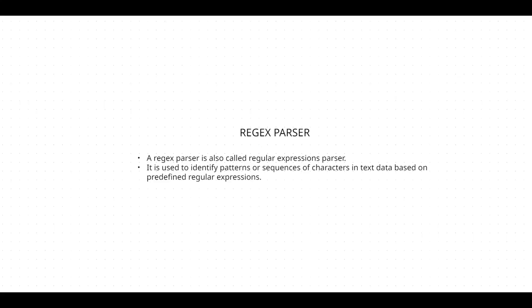Also, in some cases you want to validate data. Take the example of Google Forms — they ask you to fill in your email address. If you provide an address without the '@gmail.com' part and try to submit the form, it will tell you that you have to give the proper email address. That is nothing but validating — putting some constraints on that particular field in order to validate the data. So this is nothing but regex partial.